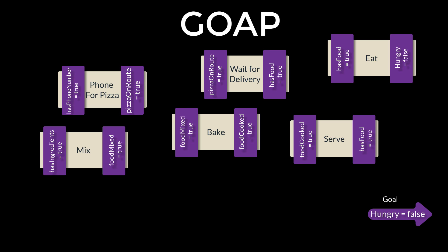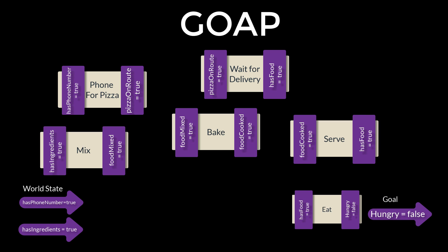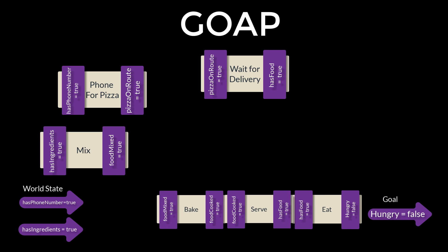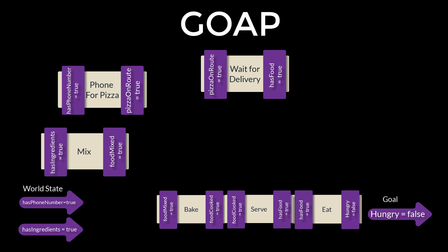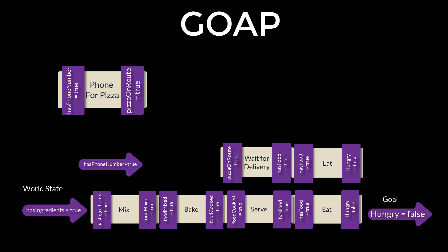Plans can generally only occur when the world and/or the agent are in a particular state. For this example let's add two: 'has ingredients is true' and 'has phone number is true'. The planning stage in GOAP always works backwards from the goal to see if it is achievable. It does this by matching the effects with preconditions into a chain, working all the way back to the world states. If it can't find a matching world state at the end, the plan is abandoned.